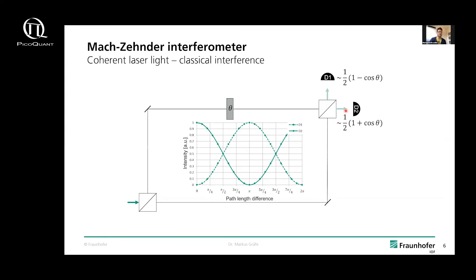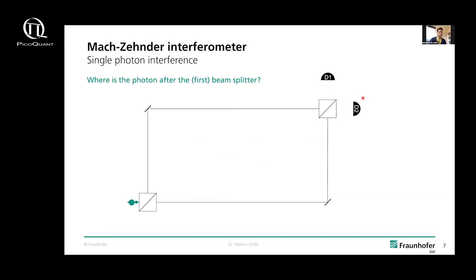You can also introduce some phase difference — some phase object, for example — and then you can make this phase an additional optical path length, giving you visible wide interference fringes. Now the question is: what happens if you take a single photon? One could say it can take either path, splitting 50/50 at each beam splitter, so you'd expect half the counts at D1 and half at D2. But of course that's not correct — even with a single photon, you have only counts at D2, because a single photon behaves as a coherent wave. It actually goes both paths, and you again have destructive and constructive interference.